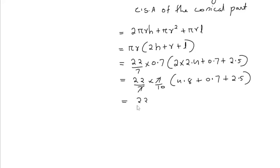So 22 by 10 into 8, which is equal to 176 divided by 10. Dividing 176 by 10 we get 17.6, which is equal to 18 cm square approximately.